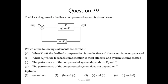Question number 39: the block diagram of a feedback compensated system is given below. Which of the following statements are correct? When KT = 0, there is unity feedback — the feedback compensation is ineffective and the system is uncompensated — this statement is correct. When KT = 0, the feedback compensation is most effective and system is compensated — this is not correct. The performance of the compensated system depends on KT and T — correct. The performance does not depend on T — not correct. So A and C are correct; the first option is correct.